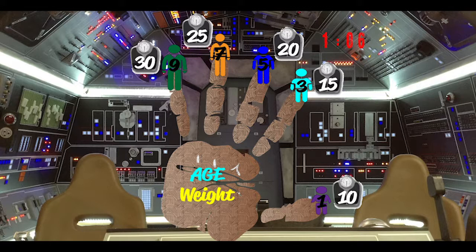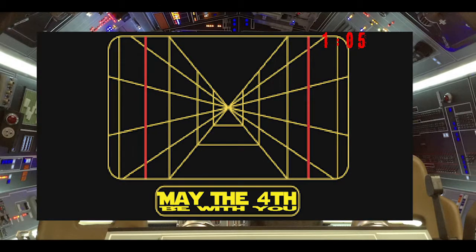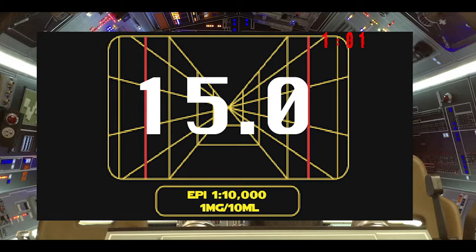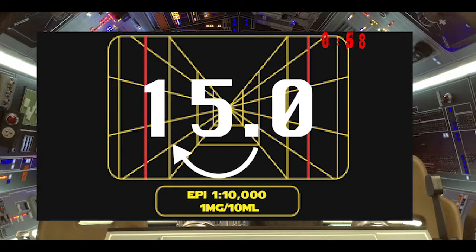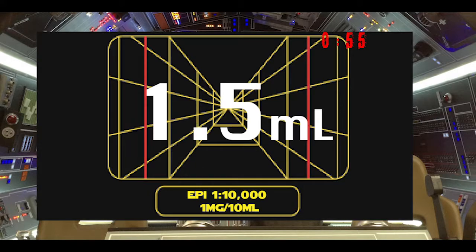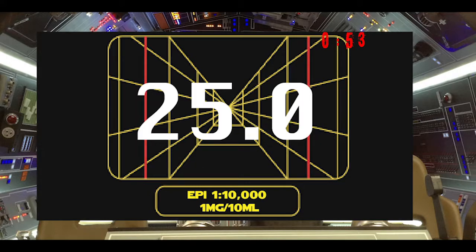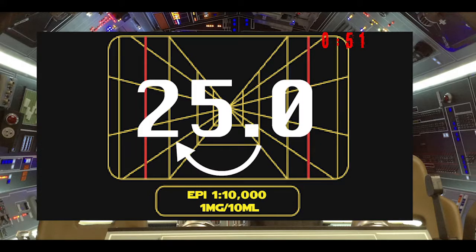For epi 1-to-10,000 and amiodarone 150mg in 3mL, once you've determined the patient's weight in kilograms for their age, you simply move the decimal point once to the left, and that will be how many mils you want to deliver to your patient.